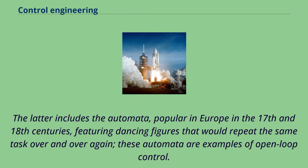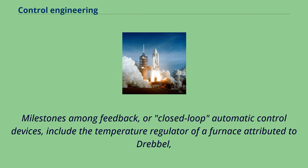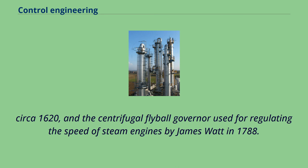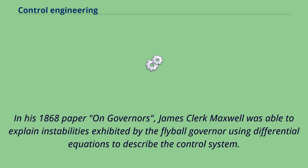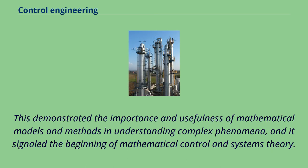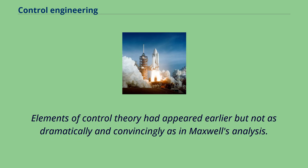The latter includes the automata popular in Europe in the 17th and 18th centuries, featuring dancing figures that would repeat the same task over and over again. These automata are examples of open-loop control. Milestones among feedback, or closed-loop automatic control devices, include the temperature regulator of a furnace attributed to Drebbel circa 1620, and the centrifugal flyball governor used for regulating the speed of steam engines by James Watt in 1788. In his 1868 paper on governors, James Clerk Maxwell was able to explain instabilities exhibited by the flyball governor using differential equations, demonstrating the importance of mathematical models and signaling the beginning of mathematical control and systems theory.